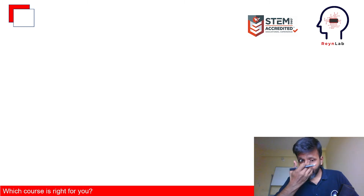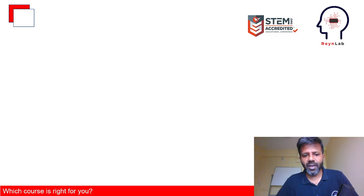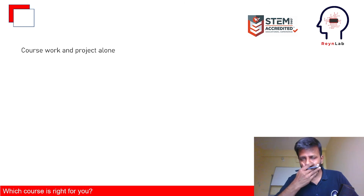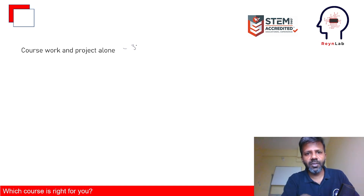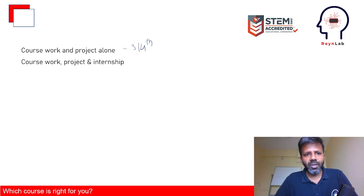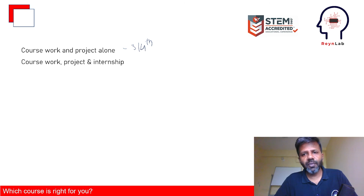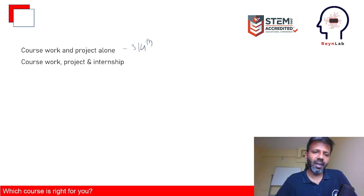Once you've decided MBD is the course for you, the next question is which version to choose. There are three versions. The first is where you do the coursework and project alone — good if you're in third or fourth semester and want an early start. The second option is for those in their final semesters who also want a meaningful internship combined with the coursework. The internships are paid — you receive a stipend — and involve live projects, not just recycled old assignments.